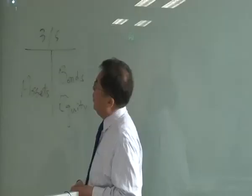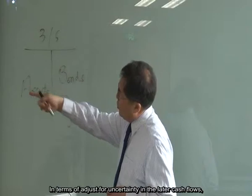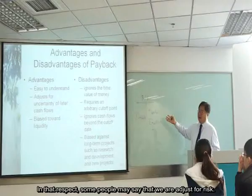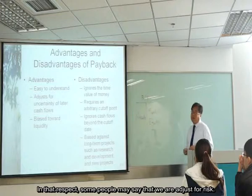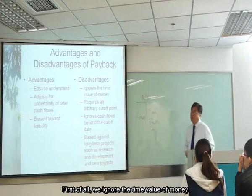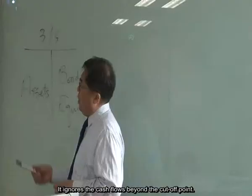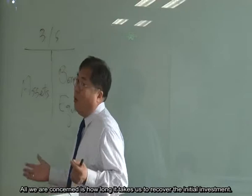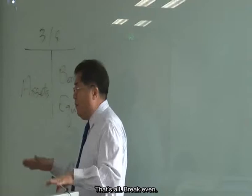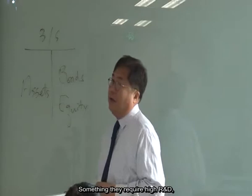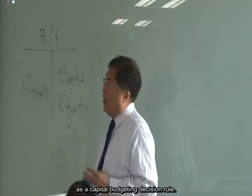Later cash flows may be ignored, which some argue adjusts for uncertainty. But there are more disadvantages: it ignores time value of money, requires an arbitrary cutoff point, ignores cash flows beyond the cutoff, and is biased against long-term projects such as R&D and new projects where it would be almost impossible to satisfy the payback rule.